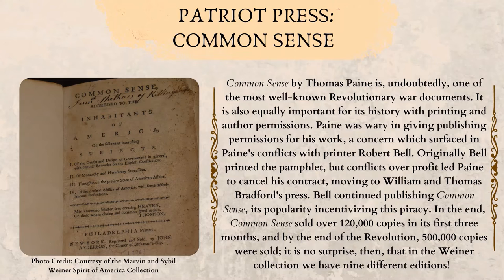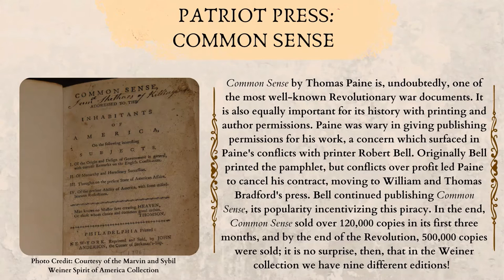Common Sense by Thomas Paine is, undoubtedly, one of the most well-known Revolutionary War documents. It is also equally important for its history with printing and author permissions. Paine was wary in giving publishing permissions for his work, a concern which surfaced in Paine's conflicts with printer Robert Bell. Originally, Bell printed the pamphlet, but conflicts over profit led Paine to cancel his contract, moving to William and Thomas Bradford's press. Bell continued publishing Common Sense, its popularity incentivizing this piracy. In the end, Common Sense sold over 120,000 copies in its first three months, and by the end of the Revolution, 500,000 copies were sold. It is no surprise, then, that in the Weiner Collection, we have nine different editions.